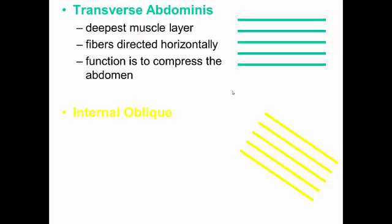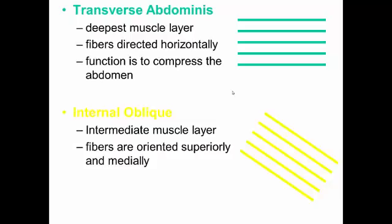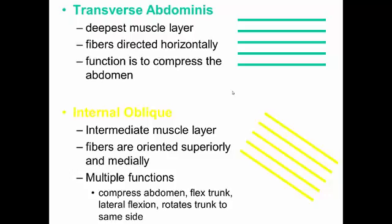Our next layer are the internal obliques. They're intermediate, they run superiorly and medially, so from lateral to medial, from inferior to superior. They have multiple functions. They can also compress the abdomen. They help flex the trunk.